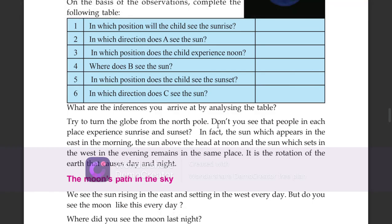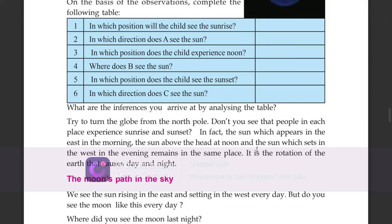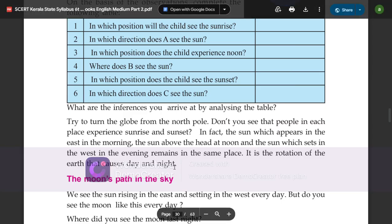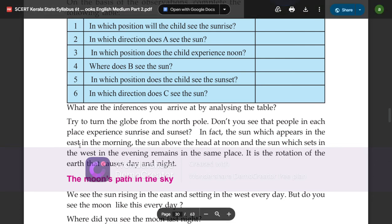Don't you see that people in each place experience sunrise and sunset? In fact, the sun which appears in the east in the morning, is above the head at noon, and sets in the west in the evening — it remains in the same place. It is the rotation of the earth that causes day and night.